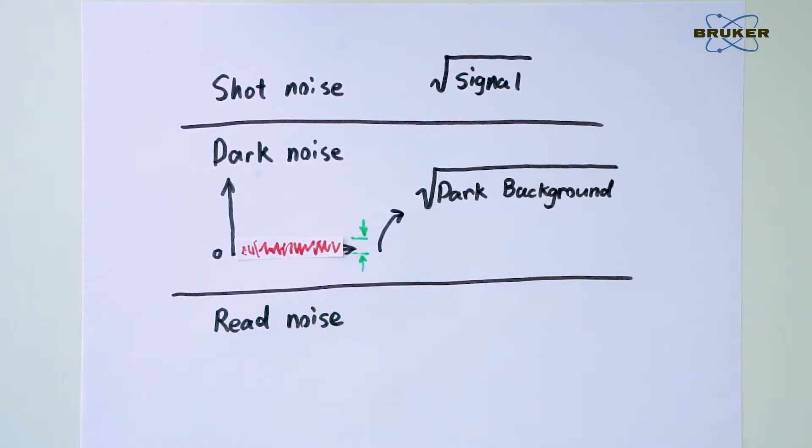Lastly, there is the read noise, which is the noise from the electronics and occurs on every CCD readout.